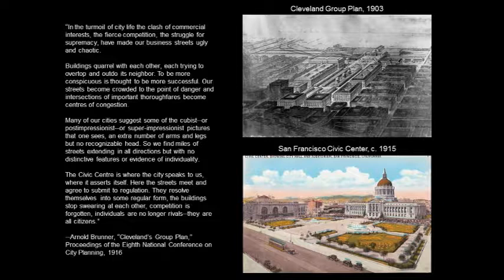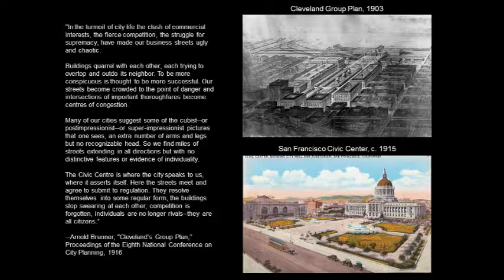In the first paragraph, Brunner is arguing that there is a class of commercial interests in the city — fierce competition, struggle for supremacy — buildings quarrel with one another to overtop and outdo each other. For Americans who had been to Rome and to Paris, there's a sense of the uncoordinated irregularity of the American city. Brunner finishes in the last paragraph by saying: the civic center is where the city speaks to us, where it asserts itself. Here the streets meet and agree to submit to regulation, to control, to collective identity. They resolve themselves with some regular form. The buildings stop swearing at each other. Competition is forgotten. Individuals are no longer rivals. They are all citizens.